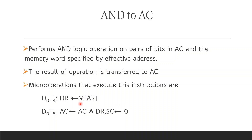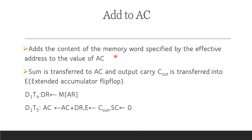For the ADD instruction (D1), at T4: M[AR] → DR, loading the memory content into the data register. At T5: AC ← AC + DR, and the carry out is stored in the extended accumulator flip-flop (E). The extended accumulator flip-flop stores overflow from the addition. Then the sequence counter is cleared.